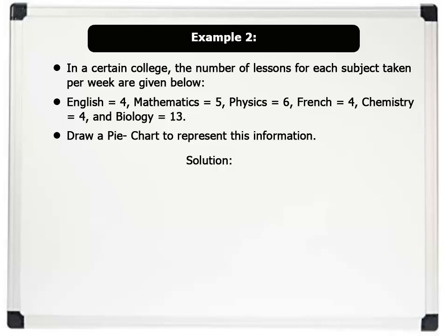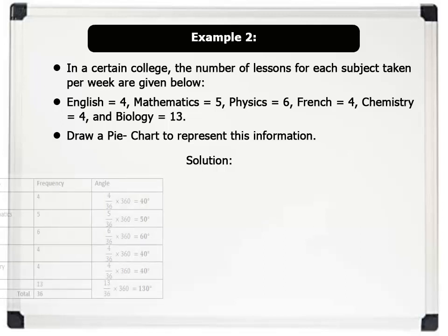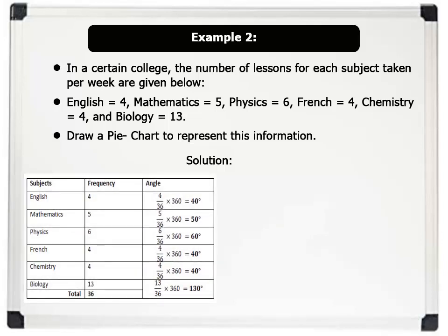Solution. First, we find the total frequency and then work out the various angles as shown in the frequency table below. Notice that to get the angles, each frequency is divided by the total frequency and then multiplied by 360.